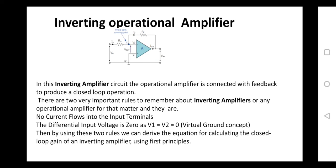Let us now discuss the inverting op-amp. The op-amp can be used either in open loop or closed loop, but only in closed loop configurations can we increase the utility by connecting the input to the inverting, non-inverting, or both terminals. Here, the output is fed back to the input forming a closed loop configuration, and the supply is given to the negative terminal — that is the reason it is called an inverting amplifier.